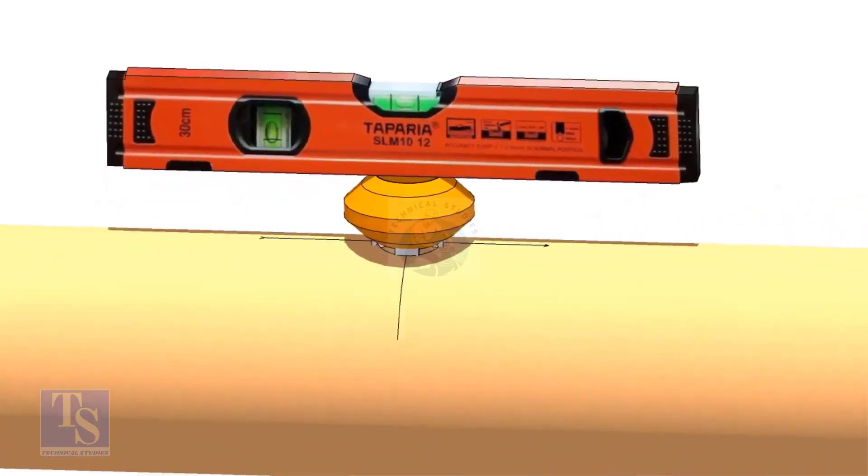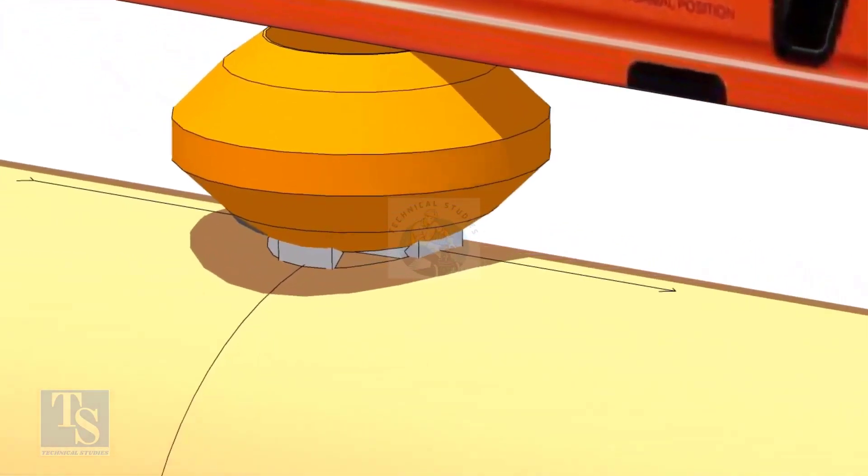If the level is correct on both ways, tack weld on the longitudinal side.